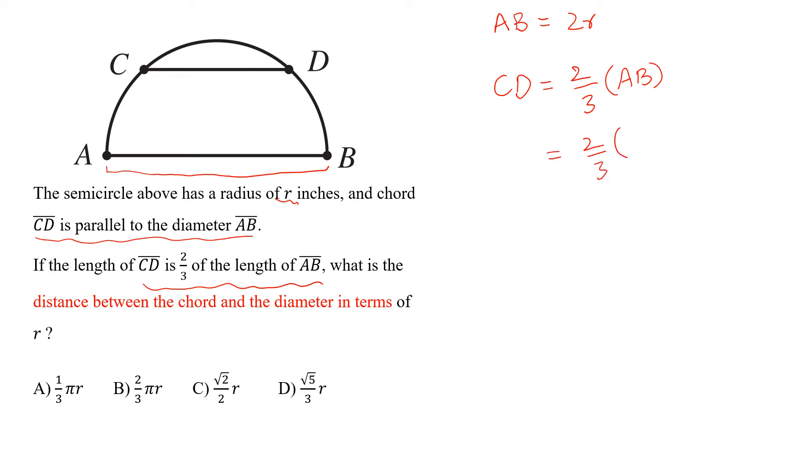And AB is 2r. So we put here 2r. Multiply this 2 into 2, 4, 4/3r.